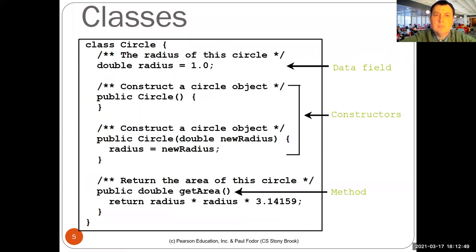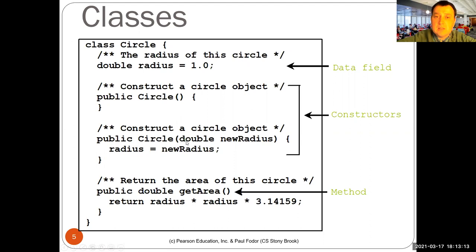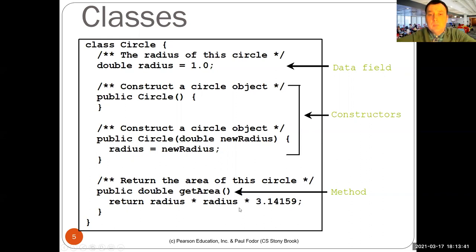So let's see an example. The class circle defines a data field radius, which by default is equal to 1.0. Then we have two constructors: one default no-argument constructor (which gives you a circle of radius 1), and another constructor that takes a double formal parameter newRadius, and assigns that to the data field radius. Then we have a non-static method, public double getArea, which returns radius times radius times 3.14159 — an approximation of pi.